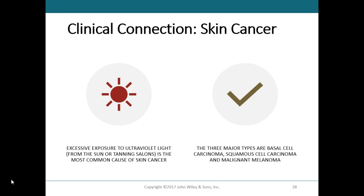Malignant melanomas arise from melanocytes and account for about 2 percent of all skin cancers. The estimated lifetime risk of developing melanoma is about one in 75, which is roughly double the risk of 20 years ago. This is partly due to increased depletion of the ozone layer allowing more UV radiation into our atmosphere, but mainly because more people are spending time in the sun and going to tanning beds.